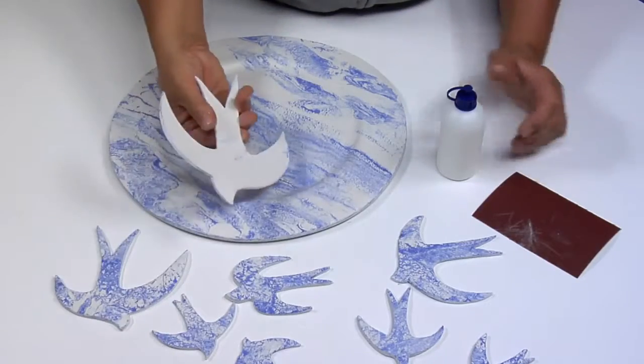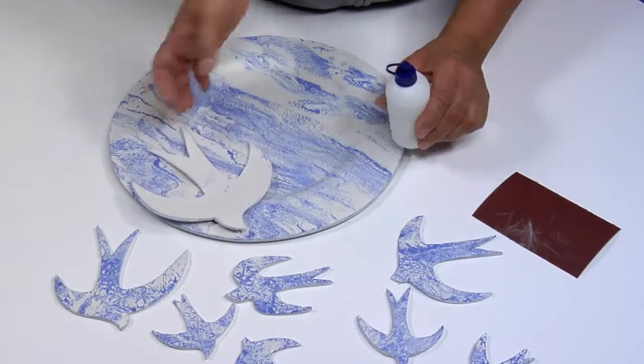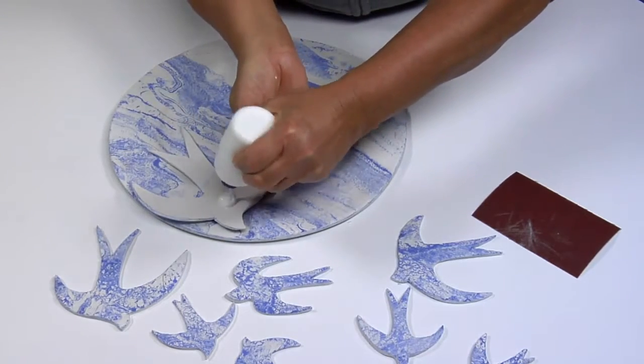Use the vinyl glue to glue the swallows arranged as you like. For example, by size, like we did.